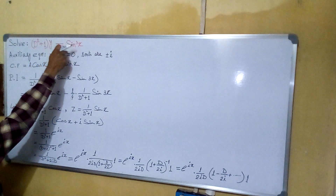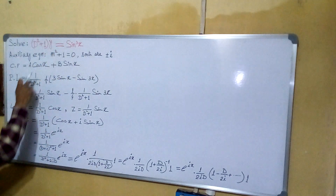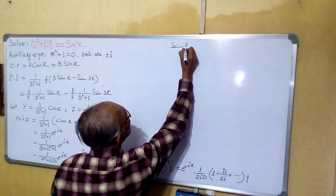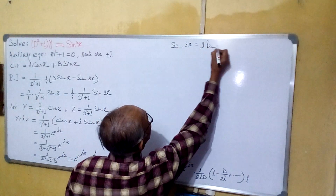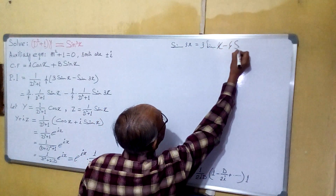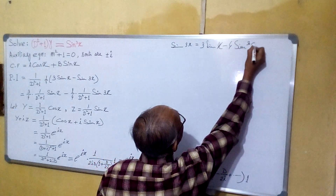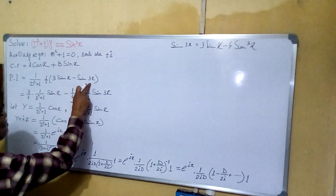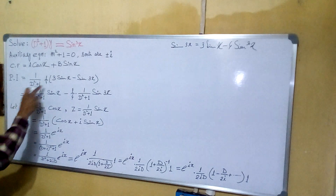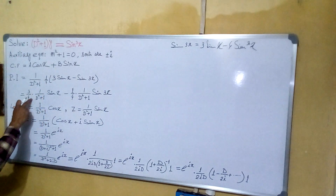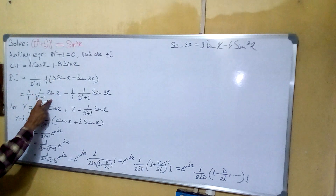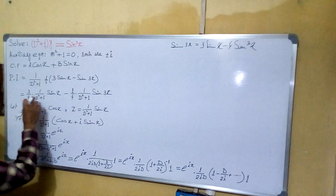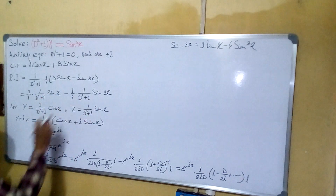So y (particular integral) equals 1/(D² + 1) · sin³x. We use the identity sin 3x = 3 sin x − 4 sin³x, which gives sin³x = (1/4)(3 sin x − sin 3x). Splitting, we write: (3/4) · 1/(D² + 1) · sin x minus (1/4) · 1/(D² + 1) · sin 3x. We will find the particular integral for these two separately.